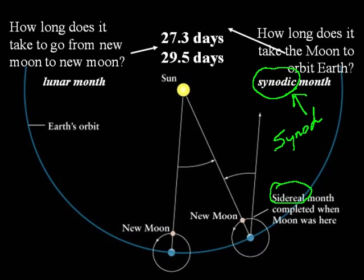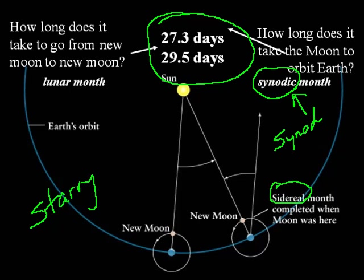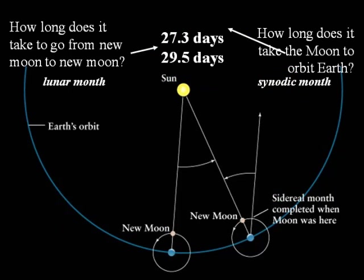The other term is sidereal, and sidereal means starry — or a star month, a month by the stars. The difference between a sidereal month and a synodic month is a couple of days. A sidereal month is actually the month where the moon revolves around the Earth by 360 degrees — technically one complete revolution.